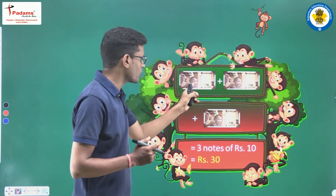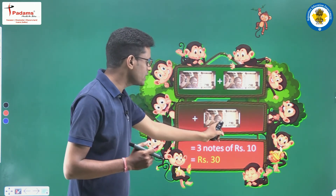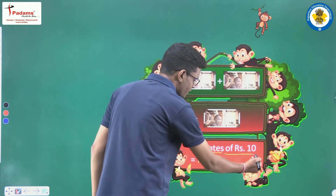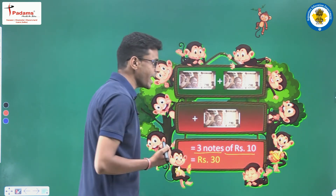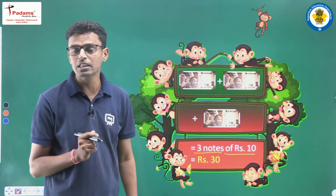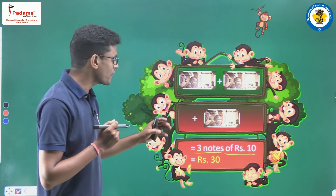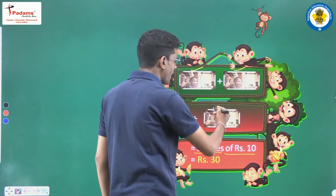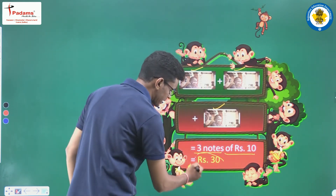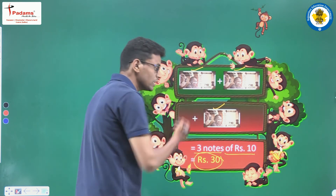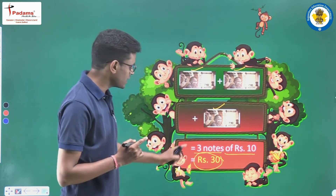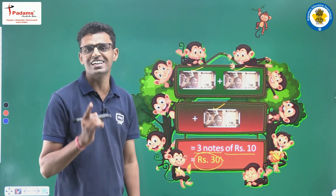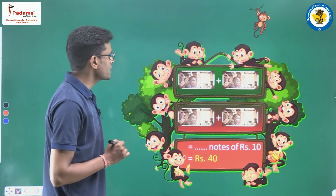Here we can see one note, two notes, and three notes. So we write: three notes of rupees 10. How many 10-rupee notes are there? Three notes. Now the value: 10, then 10 more is 20, and after another 10 is 30. So we write rupees 30. Three notes of 10 equals 30 rupees.